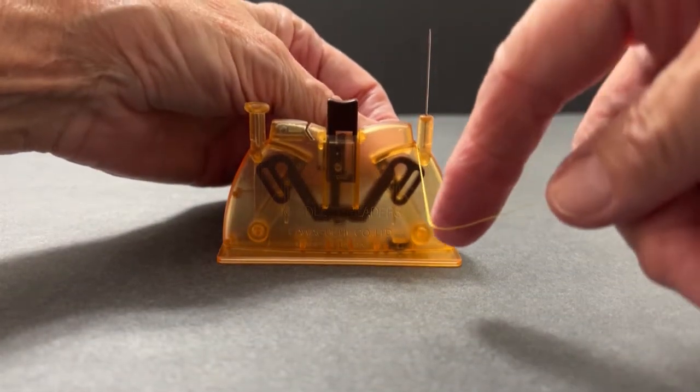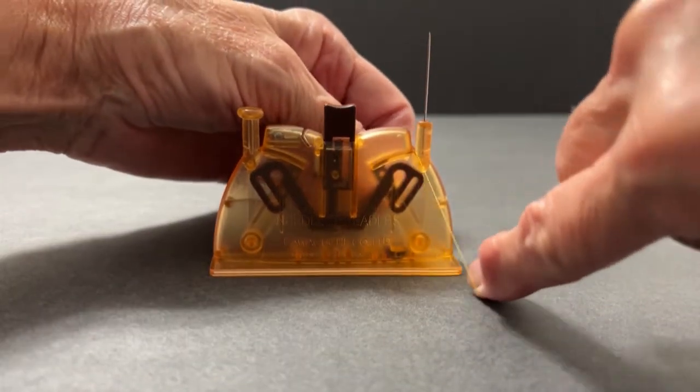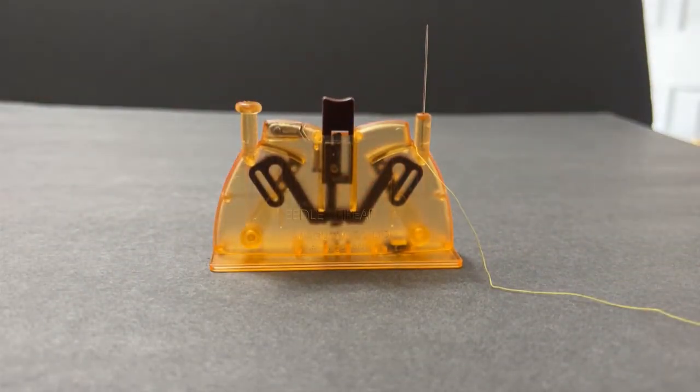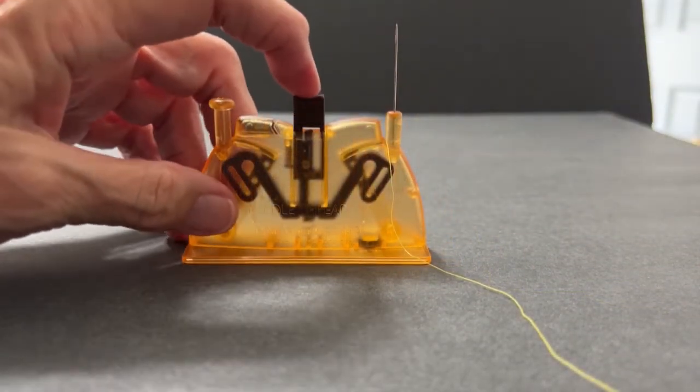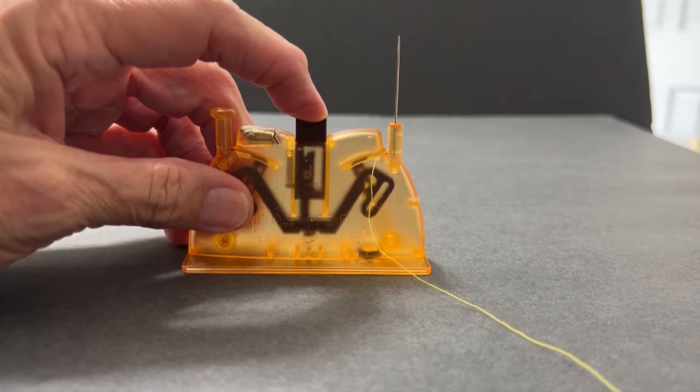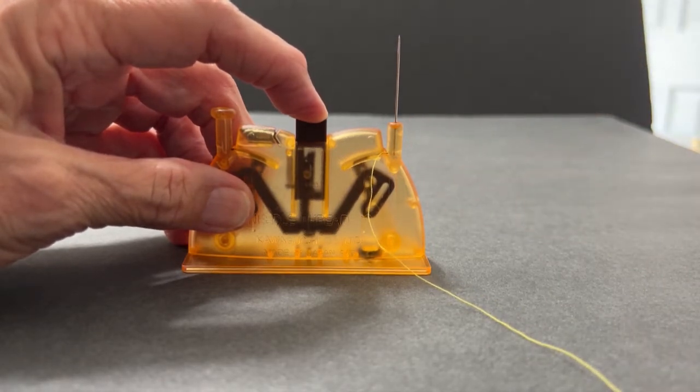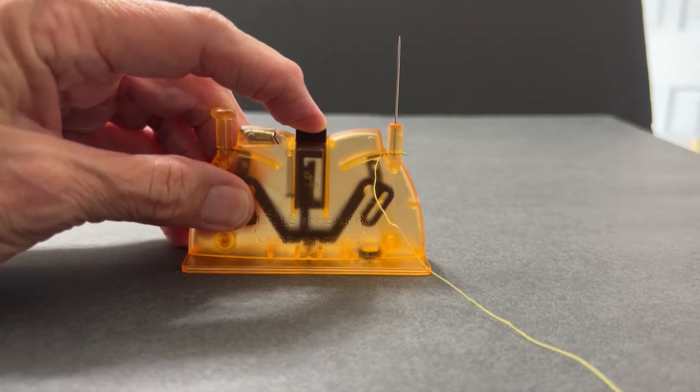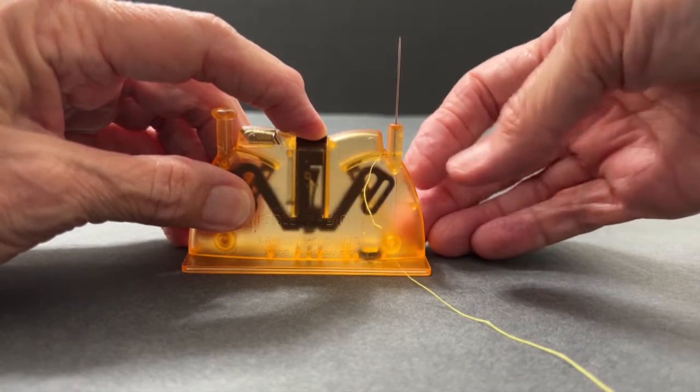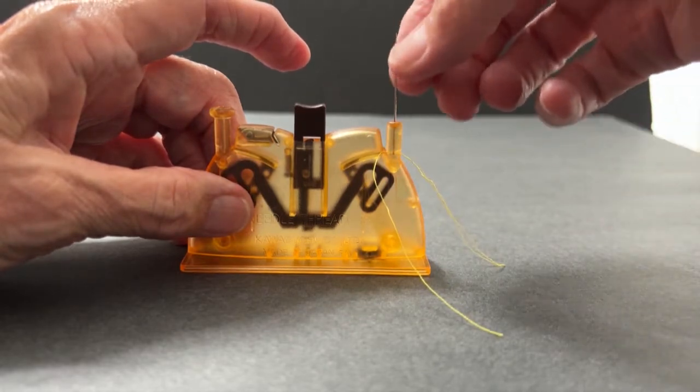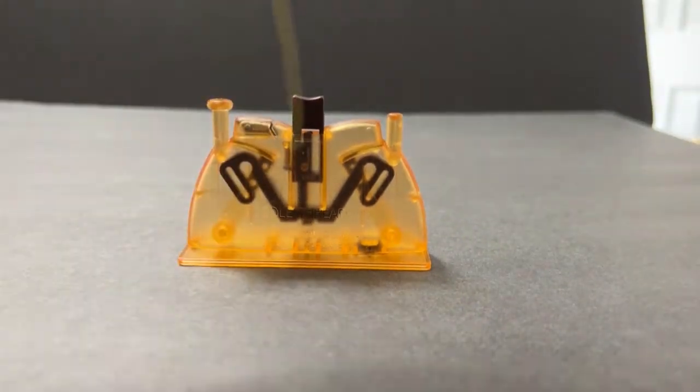Now you just take your thread and sit it in there, but you kind of pop it down. A little groove there that it will fit in. Now you push down on this button right here and somehow it knows to turn that needle around so that the eye is in the right place and it pushes that thread through. You see it's coming out right here. You can do that.